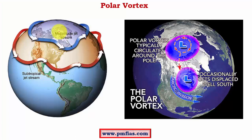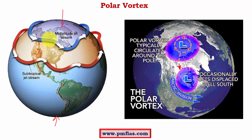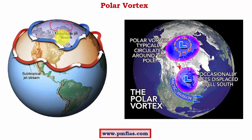The polar vortex is a polar cyclone which forms over both poles — the north pole as well as the south pole. These cyclones are held in place by a strong jet stream called the polar jet. We have two important jet streams: one is the polar jet, and the other is the subtropical jet stream. The polar vortex is held in place by the polar jet.